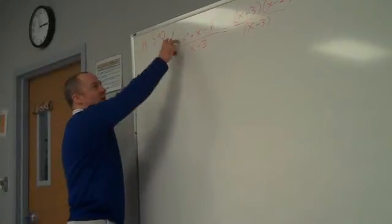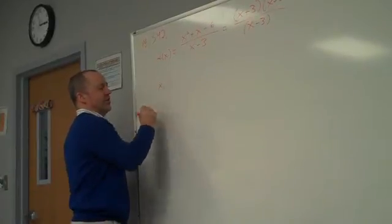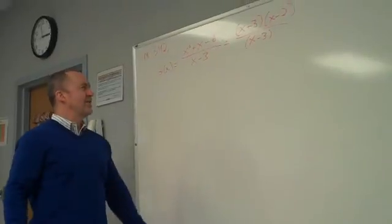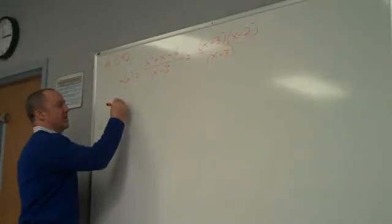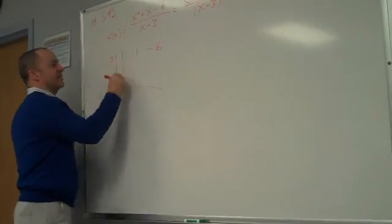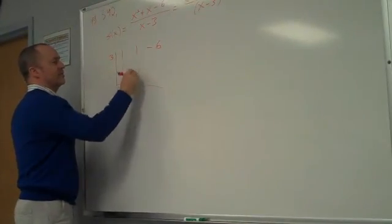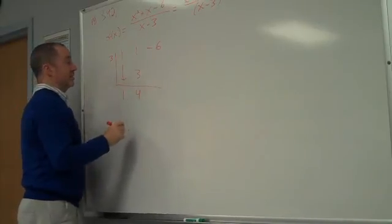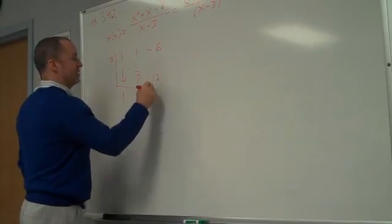If you see one degree higher, you're supposed to do either the synthetic division or the polynomial long division. Since we have a linear term on the bottom, I'm going to do the synthetic division with 3, 1, 1, negative 6. Bring down the 1. 3 times 1 is 3. 4. 3 times 4 is 12. 6.